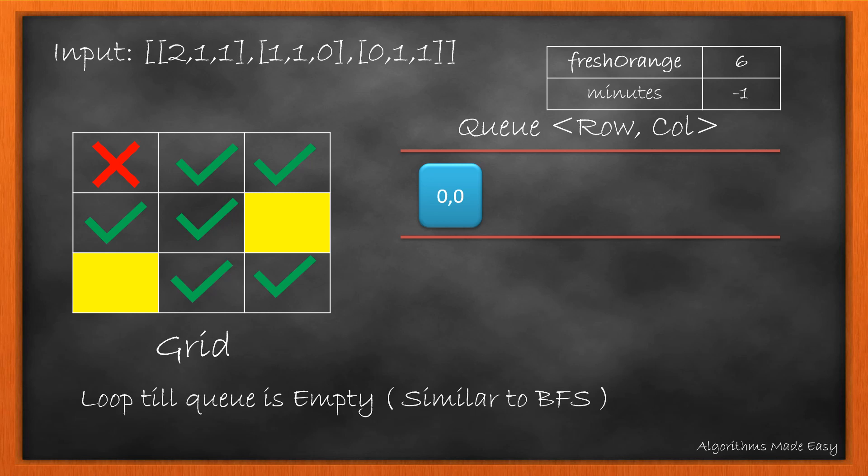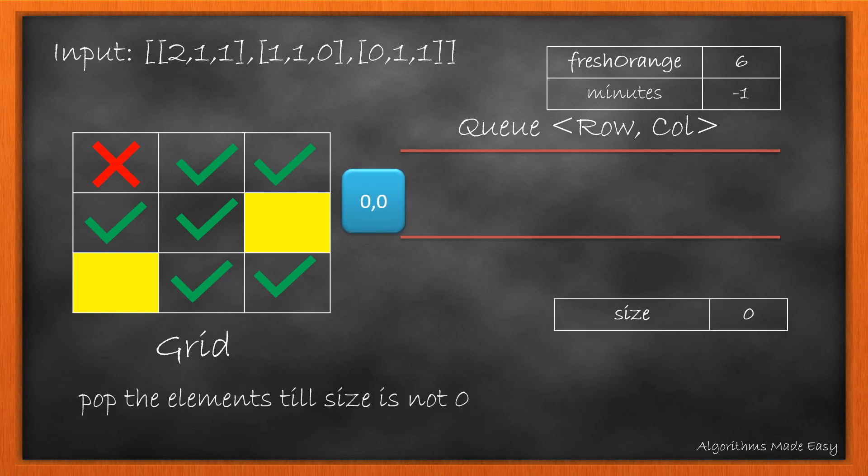Now we will loop till the queue becomes empty, similar to BFS. We will first find the size of the queue. It comes out to be 1. Now we pop the element from the queue till the size variable becomes 0.